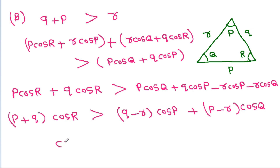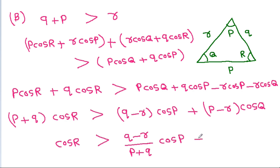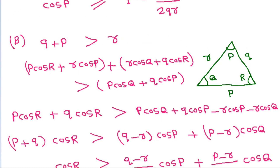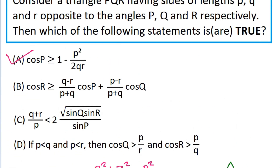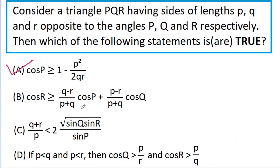From this, we can derive that cos R is greater than a combination involving the other angles and sides. So option B — cos R greater than or equal to the stated expression — is correct.